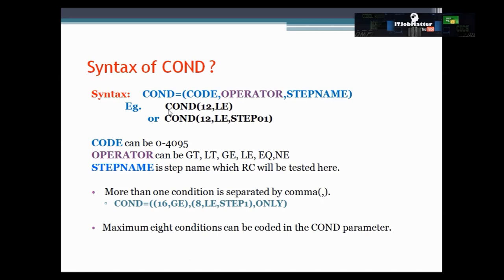Here are two examples of the COND parameter: COND=(12,LE) and COND=(12,LE,STEP1). The basic difference between these two is that if you specify the step name, it will particularly check the return code of that specific step. If you do not specify the step name, it validates the return code of all previous steps, and if any of them meet the condition, the COND parameter returns true — and in that case, step execution gets bypassed.